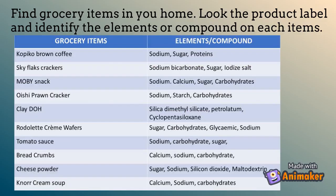Find grocery items in your home. Look at the product label and identify the elements or compounds on each item. Here is an example — you can make your own table based on what is available.